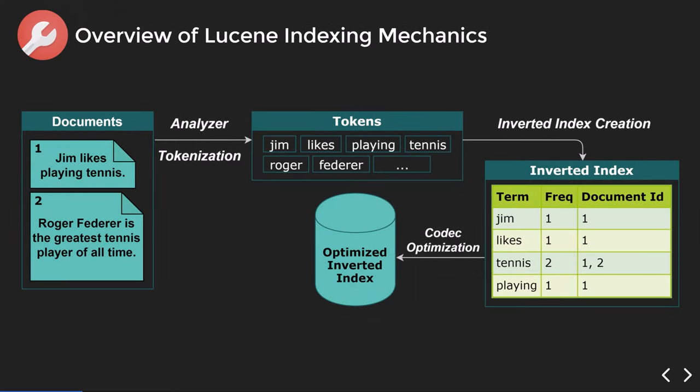Let's go over how Lucene index mechanics actually work. Consider two documents: 'Jim likes playing tennis' and 'Roger Federer is the greatest tennis player of all time.' These go through something called an analyzer which tokenizes the contents and creates tokens. It gets rid of words such as 'is', 'of', 'the' and only keeps the relevant contents. This is configurable depending on the analyzer you want to use. You end up with tokens such as Jim, likes, playing, tennis, Roger, Federer, and so on.